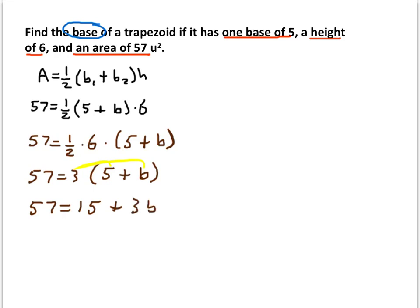Now I'm kind of running out of room, so I'll just shuffle over to here. So if we subtract 15 from both sides, then I get that 3b is equal to 42.